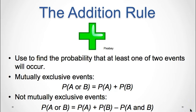A question you may be asking is: what if I need to calculate the probability of two events that are not mutually exclusive? Remember that not mutually exclusive events will have outcomes in common between the two events. The addition rule for any two events A and B that are not mutually exclusive is: P(A or B) = P(A) + P(B) − P(A and B).